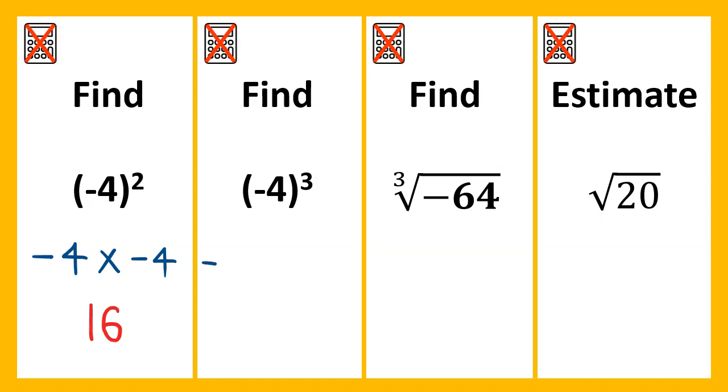For the next one, very similar but we have negative 4 multiplied by negative 4 and then multiplied by negative 4 again. We already know that negative 4 times negative 4 is 16. So we just need to multiply this by negative 4 again. 16 times 4 is 64 and it will switch it back to a negative. So negative 64.